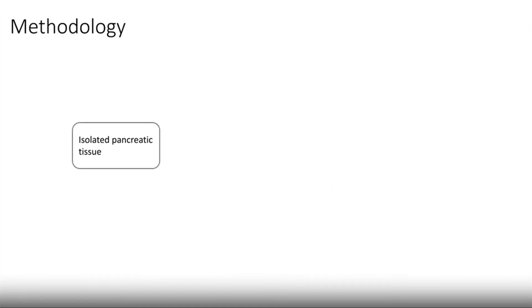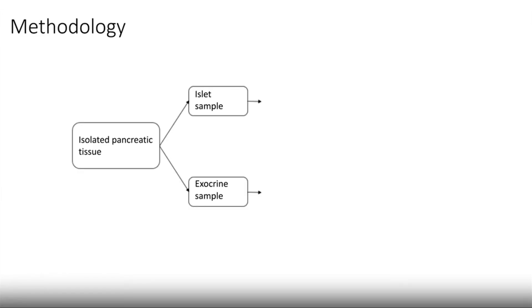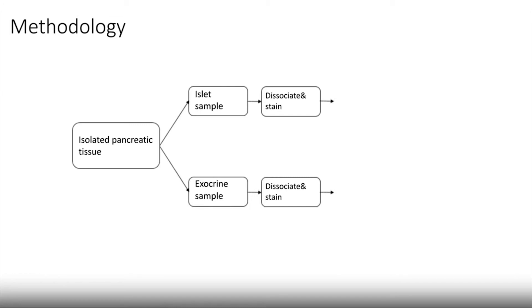For a brief overview of our methodology: after organ donation, we obtain isolated pancreatic tissue with various contents of islet and exocrine tissue. We separately processed islet samples with an islet content of 78% or higher, and exocrine samples with an islet content of 0 to 4%. To sort our cells, we first broke down larger islets and exocrine cell clusters into single-cell suspensions using the enzyme Accutase, then stained cells using markers CD31 and CD34 for endothelial cells and CD45 for leukocytes, and sorted CD31/CD34 double-positive cells using the Tyto cell sorter.